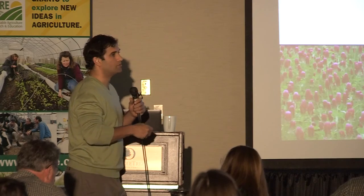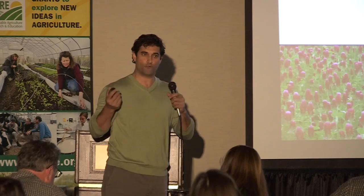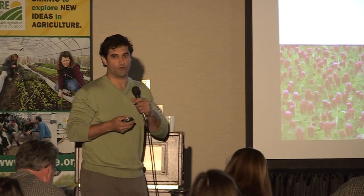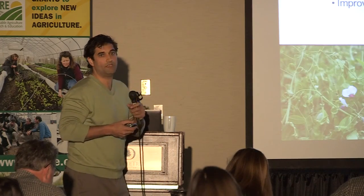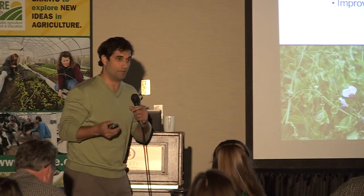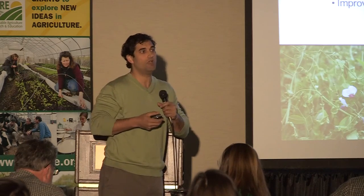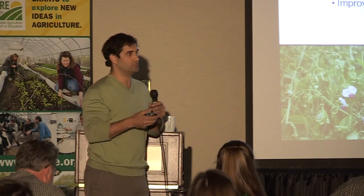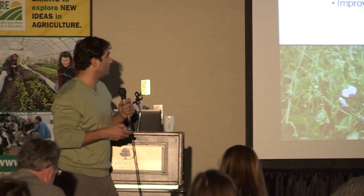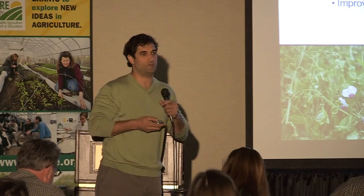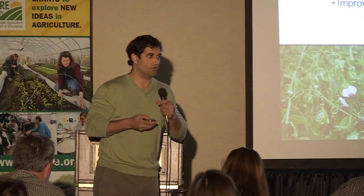Crimson clover is another common one, particularly as you get into the southern areas — it's really popular in Maryland. Austrian winter pea is one folks are excited about because it has the potential to become more winter hardy with some breeding, and it doesn't have the hard seed concerns that hairy vetch has. But consistently across the board, hairy vetch is the better biomass producer, which means more nitrogen overall.